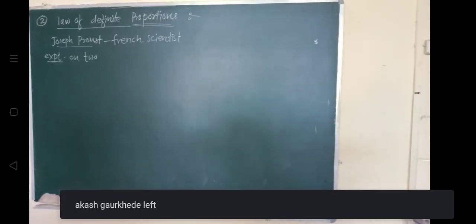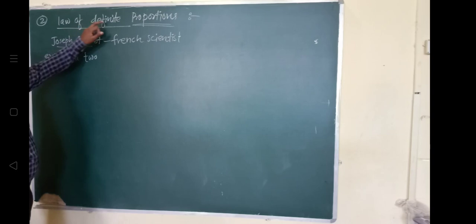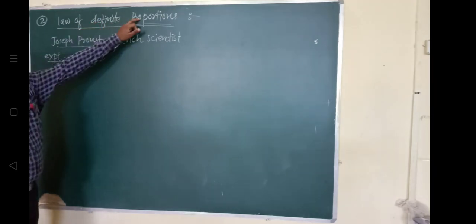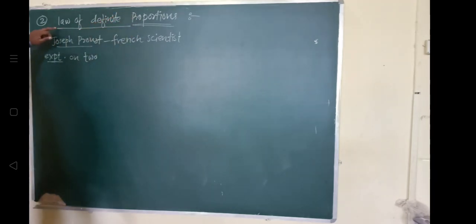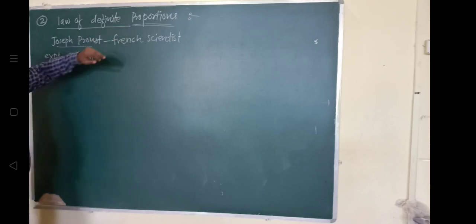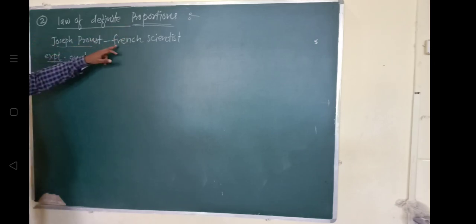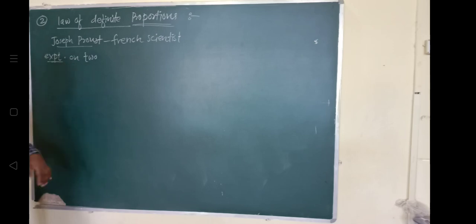So we were discussing about the Law of Definite Proportions. This law of definite proportion was given by a French scientist, Joseph Proust. So he conducted an experiment.